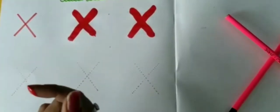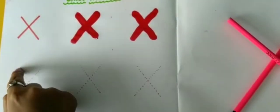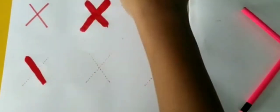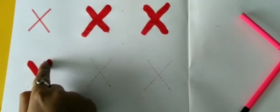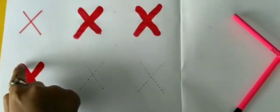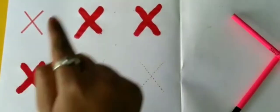Now, we will trace one more cross. One slanting line. Second, opposite slanting line. This is cross.